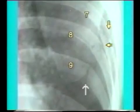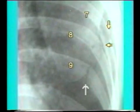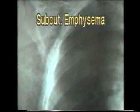This X-ray shows multiple fractures of the ribs — the 7th, 8th, and 9th ribs are seen to be fractured. This X-ray shows fracture of the right 3rd and 4th ribs with subcutaneous emphysema, that is air in the subcutaneous space.